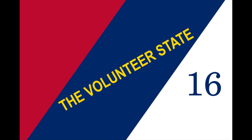During the American Civil War, Tennessee was part of the Confederate States of America. The first state flag of Tennessee was in use between 1897 and 1905 and consisted of three diagonal bands of red, blue, and white. These represented the three regions of Tennessee. The number 16 appeared on the white portion to signify Tennessee being the 16th state in the Union. The state's nickname of the Volunteer State appeared in gold across a blue portion.